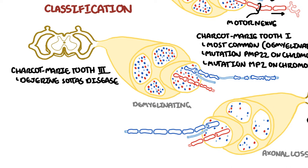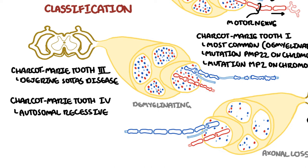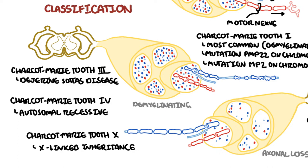Charcot-Marie-Tooth type 3 is also known as Dejerine-Sottas disease. Charcot-Marie-Tooth type 4 is inherited in a recessive manner, typically autosomal recessive. Finally, Charcot-Marie-Tooth 1X is a type where the inheritance is X-linked, so usually only males manifest the disease.